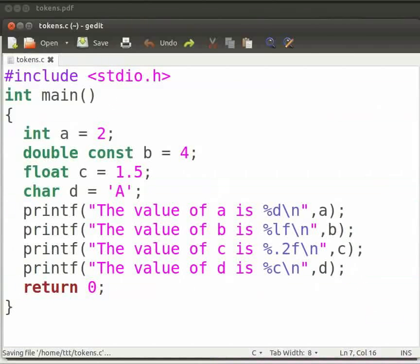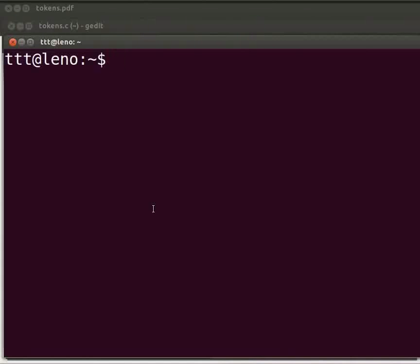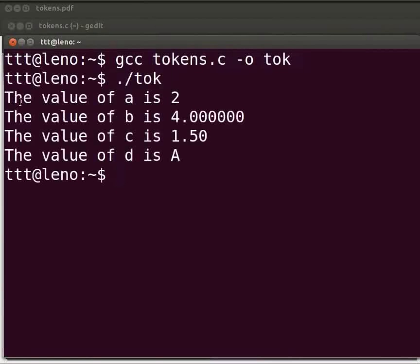Please open the terminal window by pressing ctrl, alt and t keys simultaneously on your keyboard. To compile type, gcc tokens.c -o tok. Press enter. To execute type ./tok. The output is displayed.